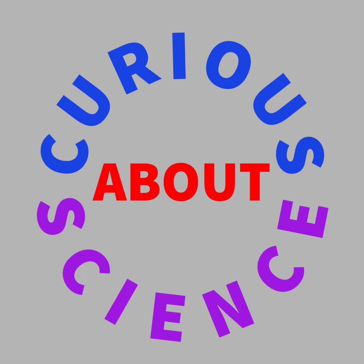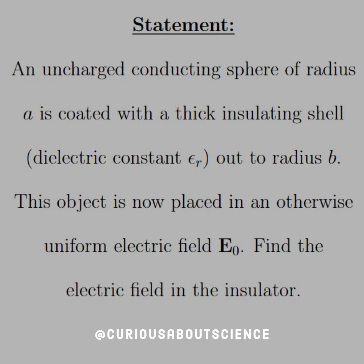Hello, back again. Our statement today reads: an uncharged conducting sphere of radius A is coated with a thick insulating shell, dielectric constant epsilon R, out to radius B. This object is now placed in an otherwise uniform electric field E0. Find the electric field in the insulator.